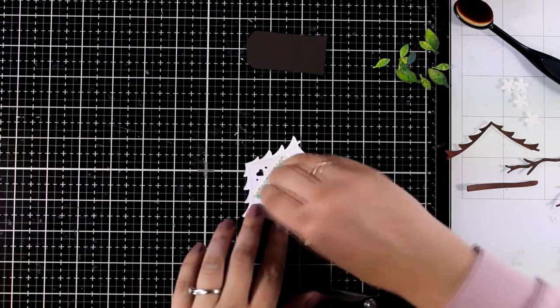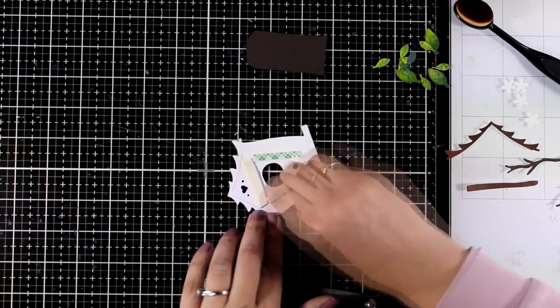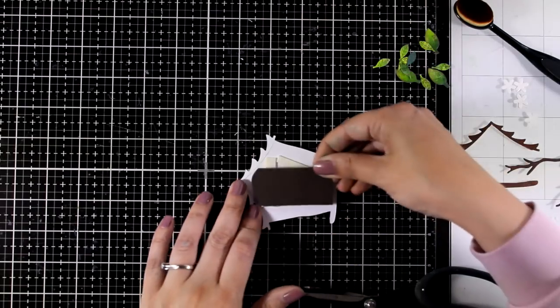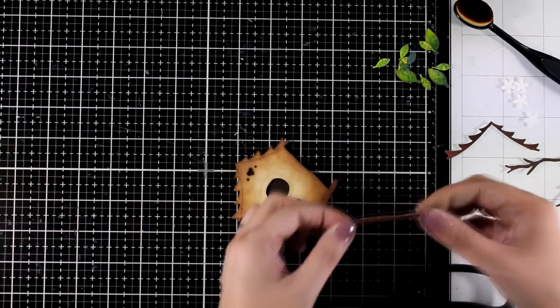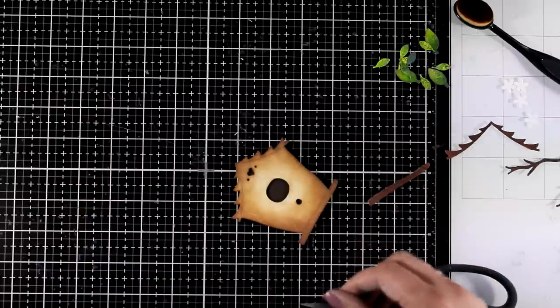At the back of my birdhouse I'm adding some foam tape and then I'm going to stick there a scrap piece of brown cardstock. This way I will cover up the back of all those holes and at the same time it gets more dimensional.